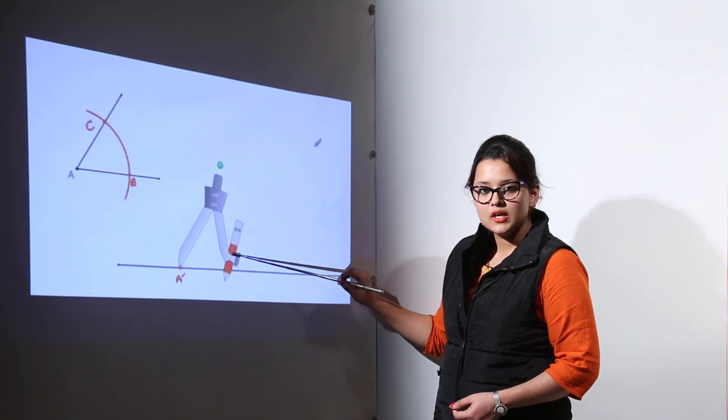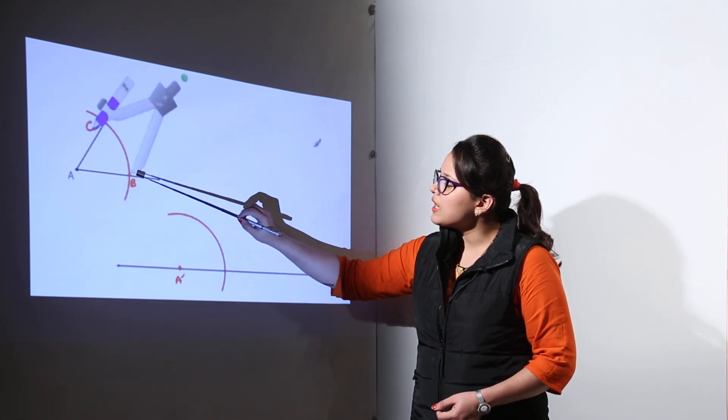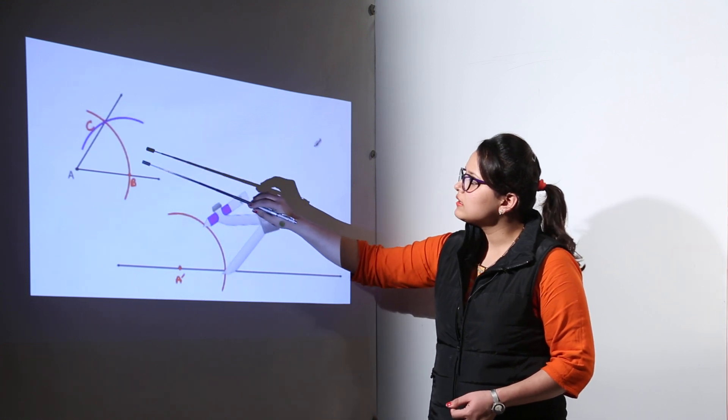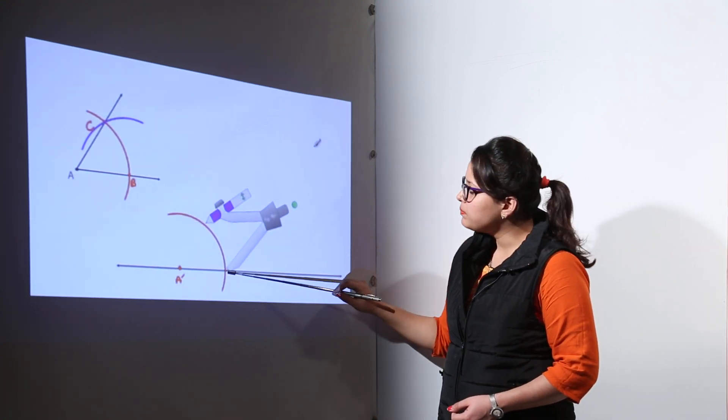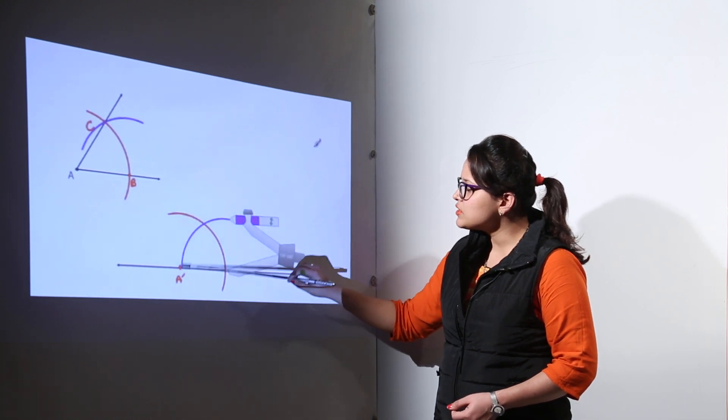Without changing the radius of the compass, you make an arc. Placing a compass on B, measuring the arc length BC, that is the arc blue, and you place your compass on this point, cutting an arc on the previous one.